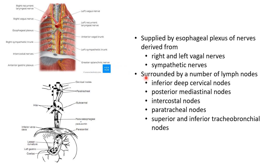The esophagus is surrounded by a number of lymph nodes. These include the inferior deep cervical nodes, posterior mediastinal nodes, intercostal nodes, paratracheal nodes, and superior and inferior tracheobronchial nodes.